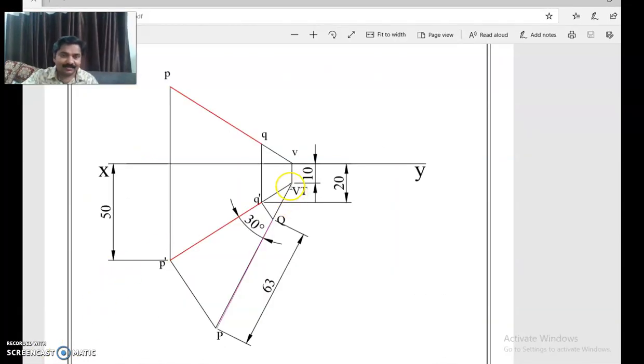Here the data for drawing the front view is given. That is one end is 20mm below HP so that Q' can be marked. Even it can be P' and the other end is 50mm below. So you can draw a locus line here.